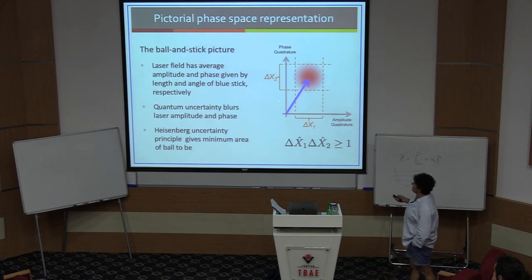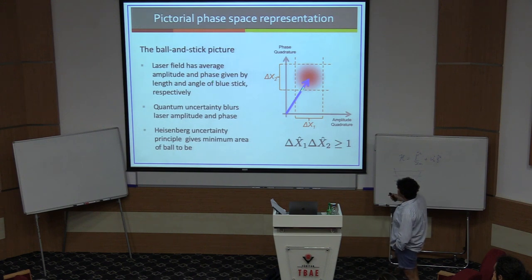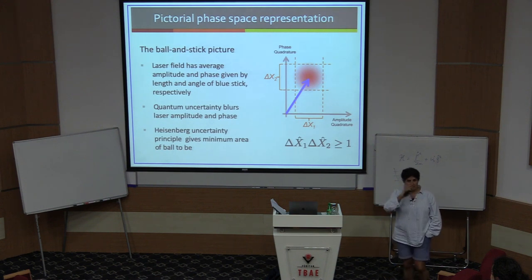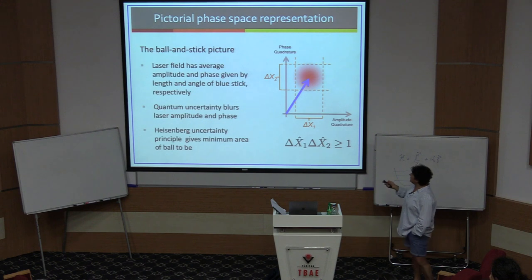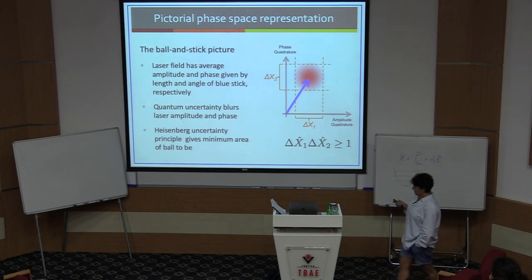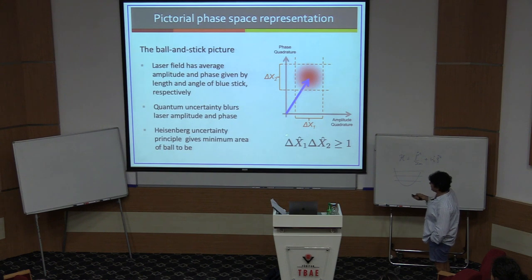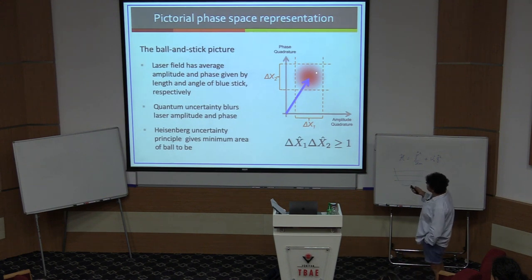Here's a phase-space representation with x1 on the horizontal axis and x2 on the vertical axis. Any light field can be expressed as follows: you take a laser field — the blue arrow — which has an amplitude given by the length of the stick and a phase given by the angle of the stick. That's your classical light field. If you had no quantization, this phasor would rotate at frequency omega, the frequency of the field. But quantum mechanics blurs the tip of this phasor — you cannot know the amplitude and phase with exquisite precision.